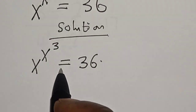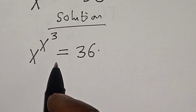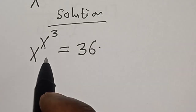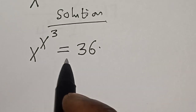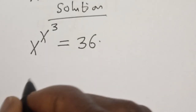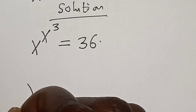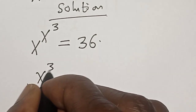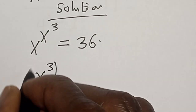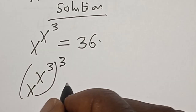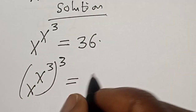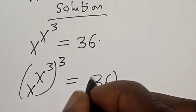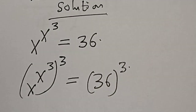Let's take the cube of the exponent of both sides. That is, s raised to the power of s raised to the power of 3, all raised to the power of 3, is equal to 36 raised to the power of 3.